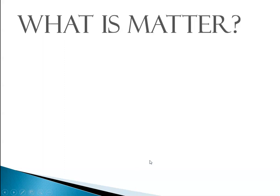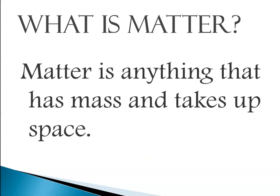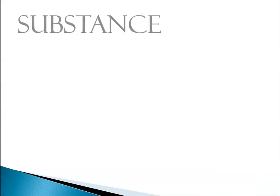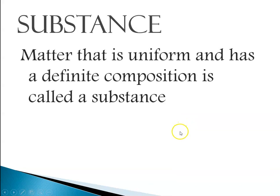So, what is matter? Matter is anything that has mass and takes up space. So, when we talk about matter, we often talk about substances. A substance is matter that has uniform and definite composition. So, if it's uniform throughout and it has a definite composition, we call it a substance.